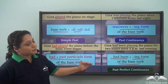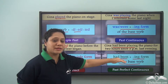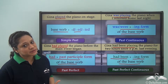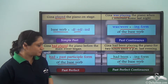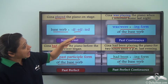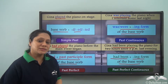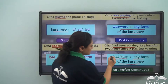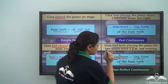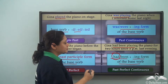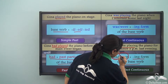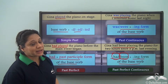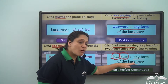The -ing form of the base verb is showing us that an action was in progress at a specific point of time in the past. The past perfect tense and the past continuous tense together make up the past perfect continuous tense. 'Had' is telling us that it is past, 'been' is telling us that it is perfect, and the -ing form of the base verb is telling us that the action was in progress.